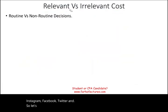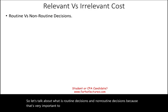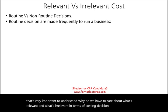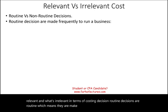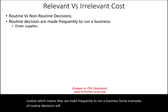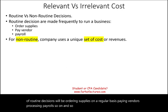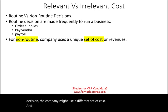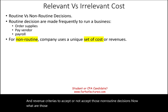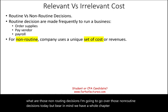Let's talk about routine decisions and non-routine decisions, because it's very important to understand why we have to care about what's relevant and irrelevant in terms of costing decisions. Routine decisions are made frequently to run a business — examples include ordering supplies, paying vendors, and processing payroll. For non-routine decisions, the company might use a different set of costs and revenue criteria to accept or reject those decisions.